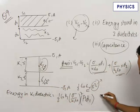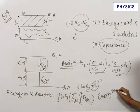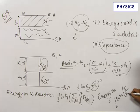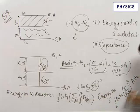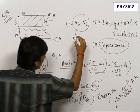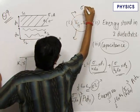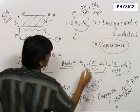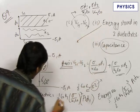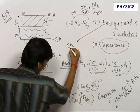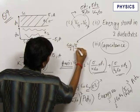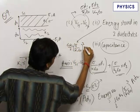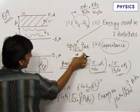Similarly, the energy stored in the k2 dielectric equals half·epsilon_0·k2·(sigma/(k2·epsilon_0))² times A·d2, obtained by replacing k1 with k2 and d1 with d2 in the previous expression. To summarize: V_s1 minus V_s2 equals sigma·d1/(k1·epsilon_0) plus sigma·d2/(k2·epsilon_0), and the energy in each dielectric is given by the respective formula above.